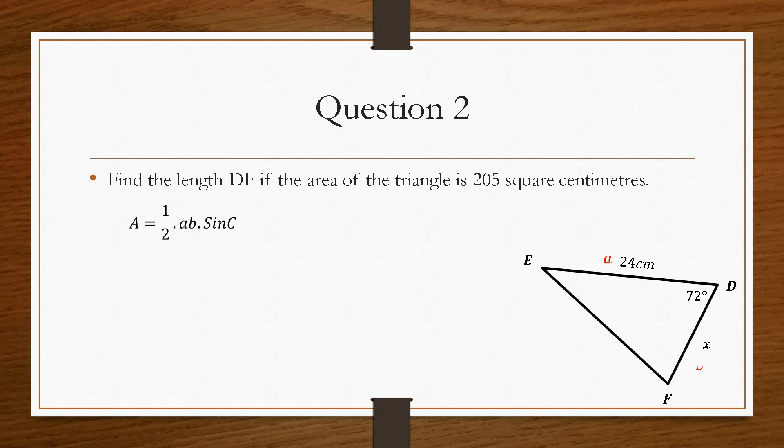If we label the triangle again with a being 24, x being b, and c being the length of EF. That has to be the case because the 72 is the capital C, and the line directly across from the angle is small c. When we plug these values into this equation, we replace b with x and replace the capital A with 205.